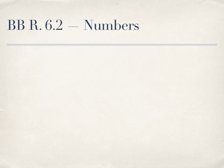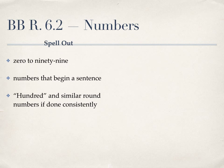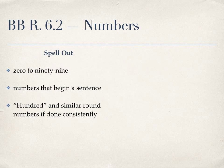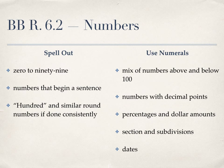Rule 6.2 clarifies when you should spell out numbers and when you should use numerals. You should spell out numbers in a textual sentence when the number is under 100. You should also spell out numbers that begin a sentence. You may spell out round numbers, such as 100 or 1000, as long as you're spelling such terms consistently. On the other hand, you should use numerals when listing a mix of numbers above and below 100. Also use numerals where the number contains a decimal point, percent symbol, or dollar sign.